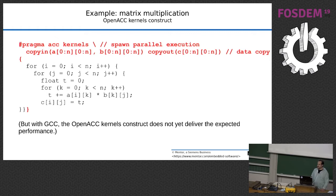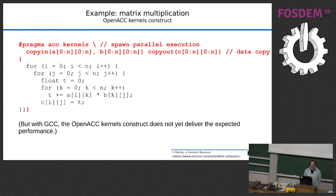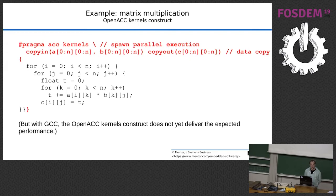Then we have the OpenACC kernels construct, which is an alternative compute construct to the parallel construct. Here I have not put in all the ACC Loop directives — you don't need them in the kernels construct. It's the compiler's job to figure out which loops can be run in parallel, how they should be parallelized, which level of gang, worker, or vector parallelism to apply, and the hardest part: whether there are any data dependencies. That needs more intelligence from the compiler. GCC does some things, but there's more work to be done. So if you want performance, use the parallel construct with GCC for now.